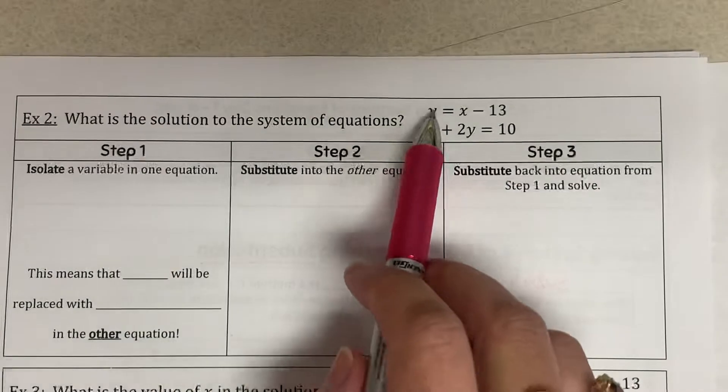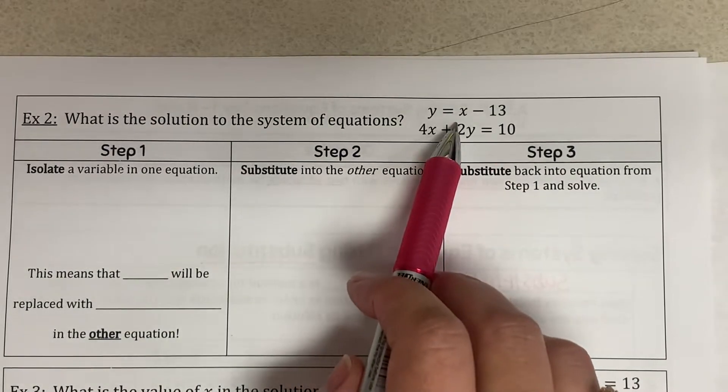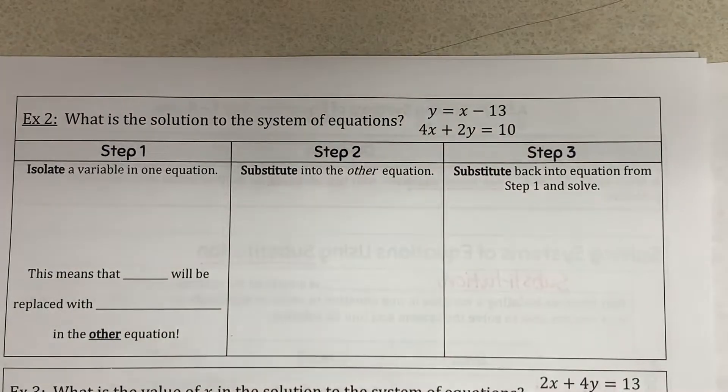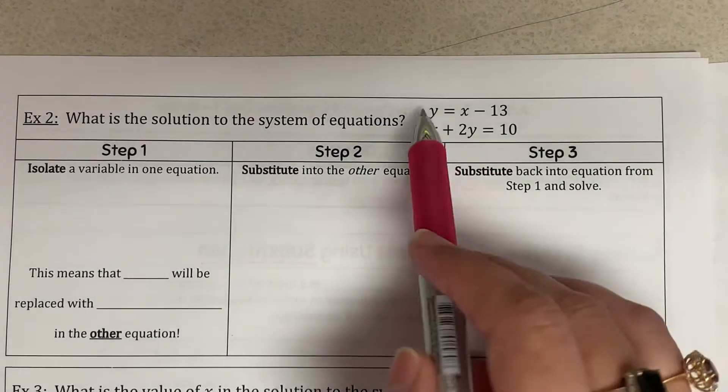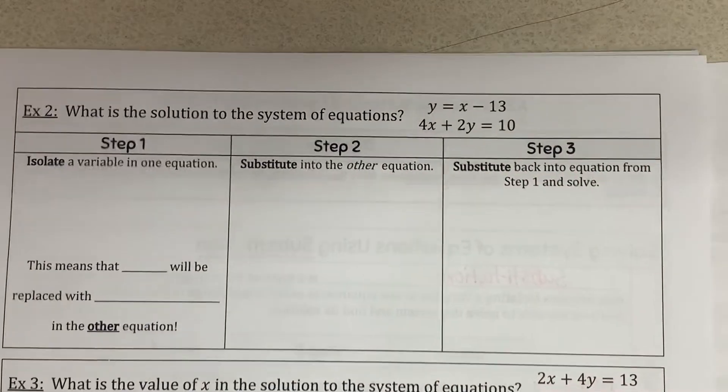You should be able to do Example 2 by yourself — just refer back to how I did Example 1. The variable is already isolated, so no need to worry about that step.